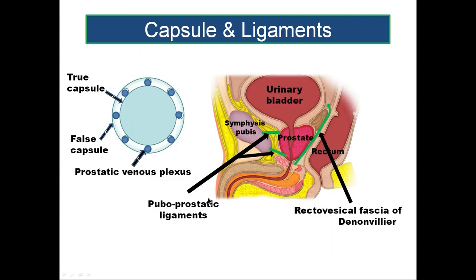Now let us look at the coverings of the prostate. The coverings of the prostate are arranged as its capsule and ligaments. The capsule of the prostate is in the form of two layers — a true capsule and a false capsule.